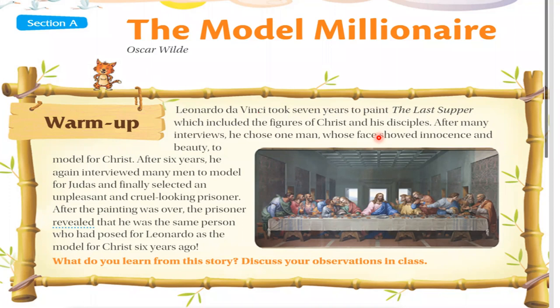After many interviews, Leonardo chose one man whose face showed innocence and beauty to model for Christ. After six years, he again interviewed many men to model for Judas, and finally selected an unpleasant and cruel-looking prisoner. After the painting was over, the prisoner revealed that he was the same person who had posed for Leonardo as the model for Christ six years ago.